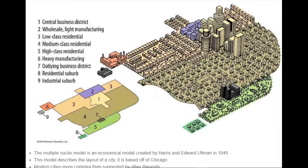Modern cities were more complex than suggested by other theorists. Each nucleus acts as a growth point, and growth occurs from each nucleus until they all merge into one larger urban area. This theory also says that even though a city may have begun with a CBD, it will have other smaller CBDs develop on the outer skirts of the city, situated around valuable housing areas to allow certain commuters to work outside the city.